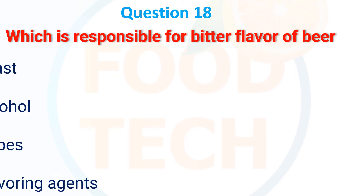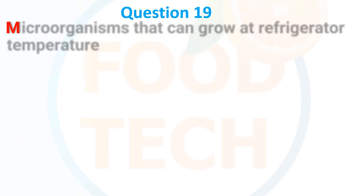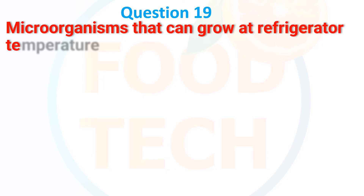Next MCQ: Which is responsible for the bitter flavor of beer? Options: (A) Yeast, (B) Alcohol, (C) Hops, (D) Flavoring agents. The correct answer is C — hops.